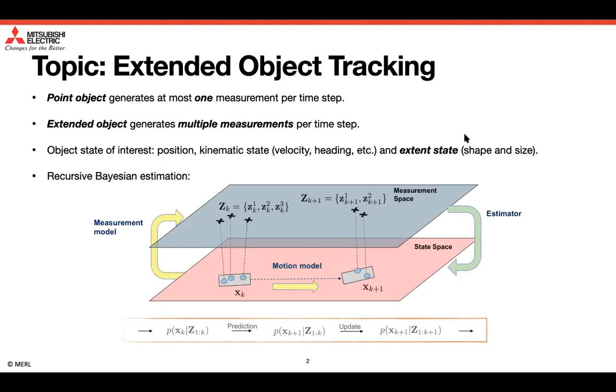The extended object tracking problem is typically solved with recursive Bayesian estimation. More specifically, at each time step, we first compute the predicted object state using the motion model in the prediction step, and then we compute the updated object state using the measurement information in update step. The object's state of interest is then extracted from the posterior density using an estimator.